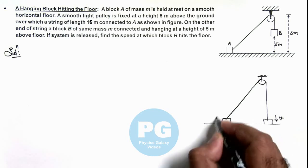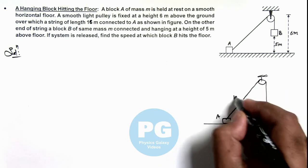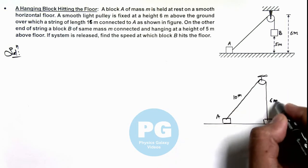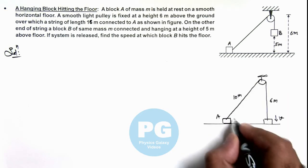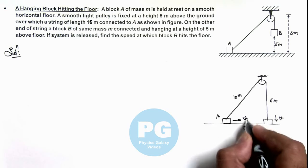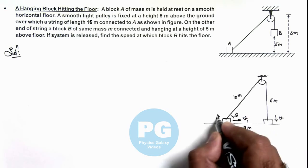This will be block A, and the length of this string will be 10 meters as this height is 6 meters. So obviously in this triangle, this distance would be 8 meters. Say the block A is moving toward right with speed v1, and say if this angle is theta.